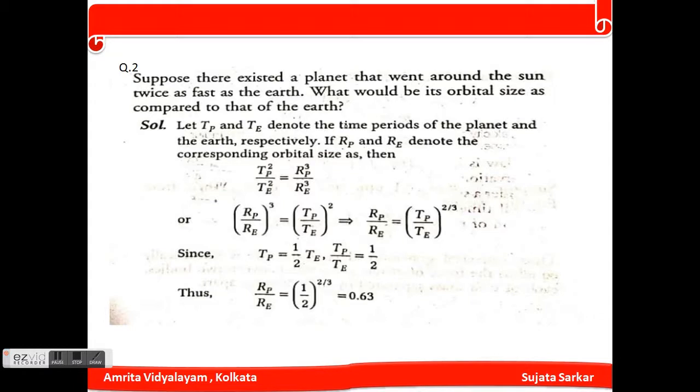Let T_p and T_e denote the time period of the planet and the earth respectively, and R_p and R_e denote the corresponding orbital sizes. Then (T_p/T_e)² = (R_p/R_e)³, so R_p/R_e equals (T_p/T_e) to the power two-thirds.